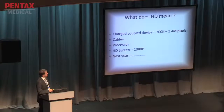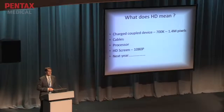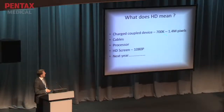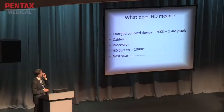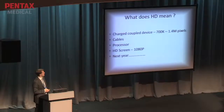High-definition endoscopy is really a combination of four things. Firstly, you need a chip with lots of pixels — earlier chips were about three to four hundred thousand pixels, and now we have megapixel-sized chips, the little charge-coupled devices in the end of the scope that are light-sensitive. You also need proper cables, a clever processor, and an HD screen.